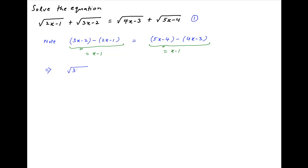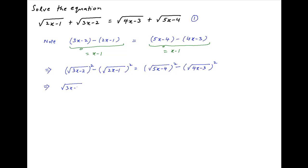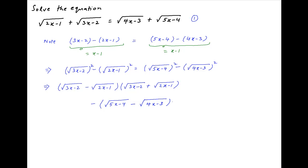This can be written as (√(3x-2))² - (√(2x-1))² = (√(5x-4))² - (√(4x-3))², which factors as [√(3x-2) - √(2x-1)] · [√(3x-2) + √(2x-1)] minus [√(5x-4) - √(4x-3)] · [√(5x-4) + √(4x-3)] = 0.